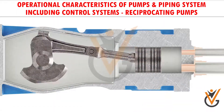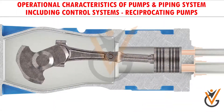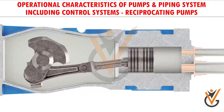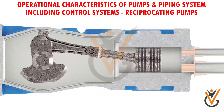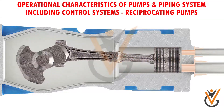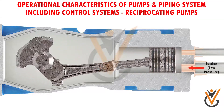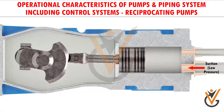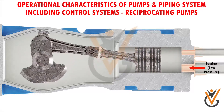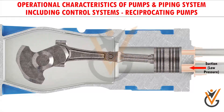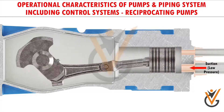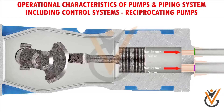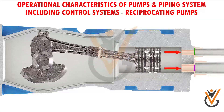Therefore the piston starts reciprocating. During this motion, when the piston moves back in the cylinder, it creates a low pressure inside the cylinder. Due to this low pressure, water from the tank is sucked into the cylinder. These are non-return valves.